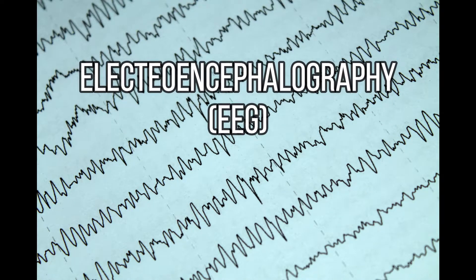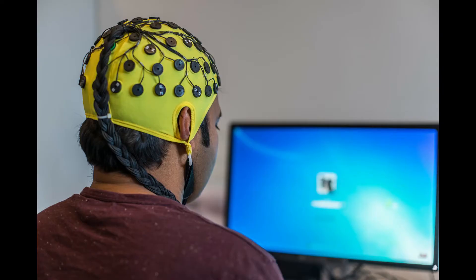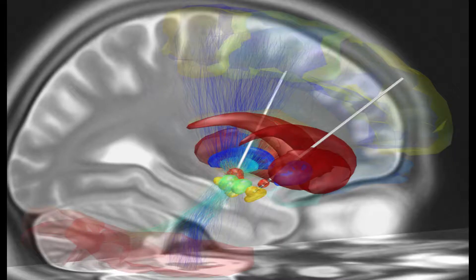Electroencephalography, simple as EEG. We place metal discs on our scalp, or we can insert electrodes in our brain. They will monitor the brain activity.